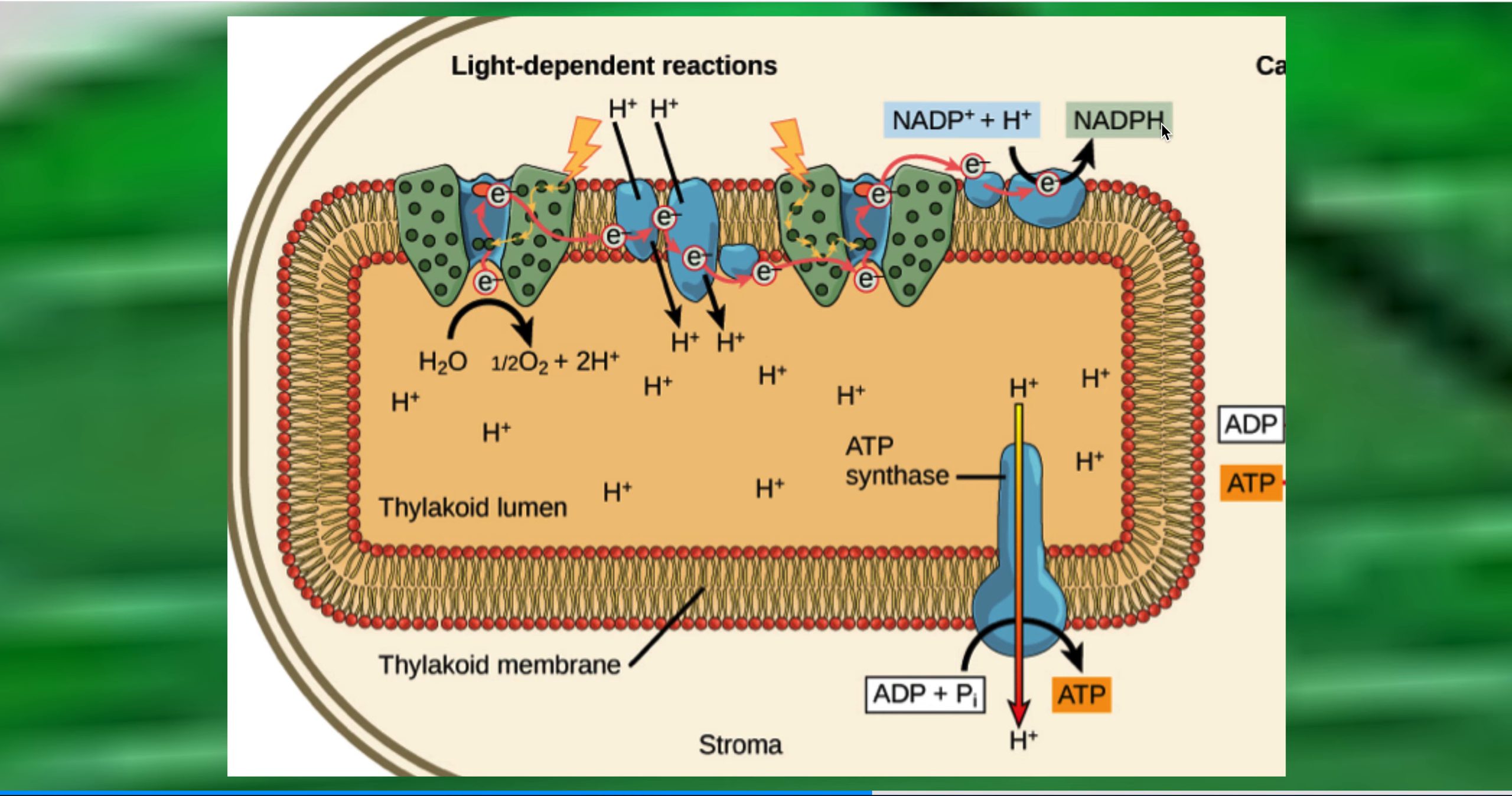So if you remember from respiration, we had NAD+ going to NADH, so this is simply a very similar molecule, and all we've done is stored some electrons here on NADPH. Okay, once we have a high concentration of hydrogen ions here in the middle, we can use that concentration gradient.